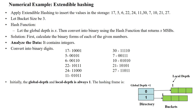Welcome to the extendable hashing example. Here we have 11 numbers that have to be inserted into memory storage using the extendable hashing approach. We will take the bucket size as 3, so each bucket can store 3 elements in the memory locations. The hash function uses global depth x.